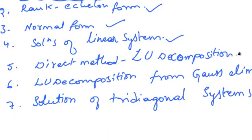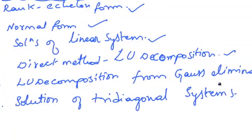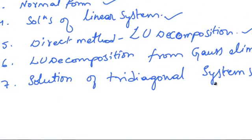Fifth is direct method of LU decomposition. Sixth is LU decomposition from Gauss elimination method. Seventh is solution of tri-diagonal systems.